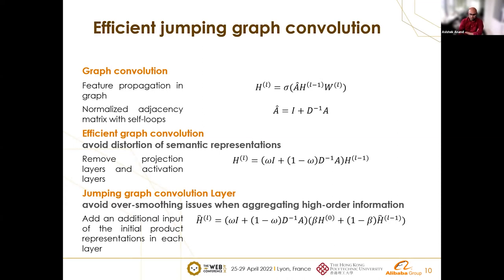A second question was asked about the jumping connection: how is it implemented — is gating used between the original feature and extracted features? The speaker explained that the initial features from the first layer are injected into every subsequent layer, which is how the jumping connection is realized.